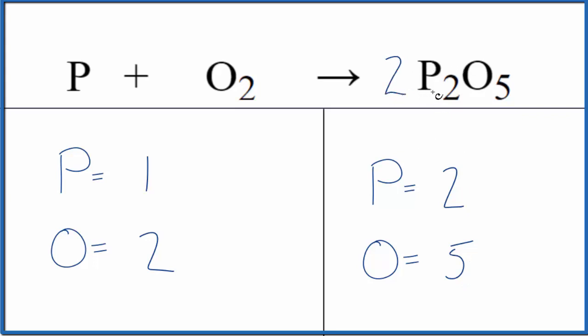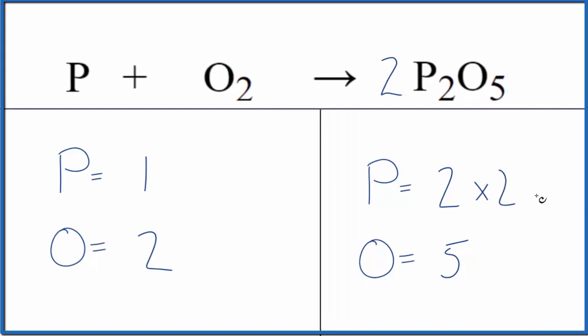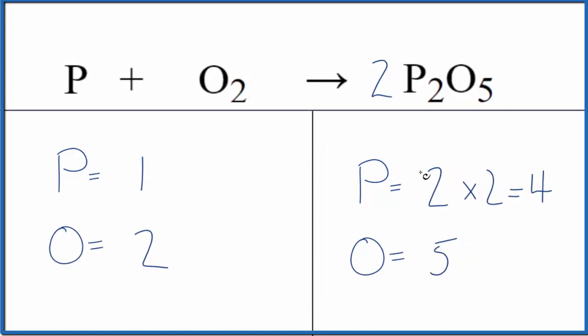So if we put a 2 in front of the P2O5, 2 times 2 would give us 4, and then 5 times 2 would give us 10. So now we could just put a 5 in front of the oxygen, 2 times 5, that's 10.